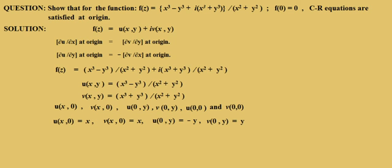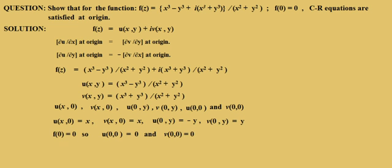Now, the given function f(0) = 0, meaning the value of the function at the origin is 0. This means both the real part and imaginary part are equal to 0 at the origin. So f(0) = 0 implies u(0,0) = 0 and v(0,0) = 0.